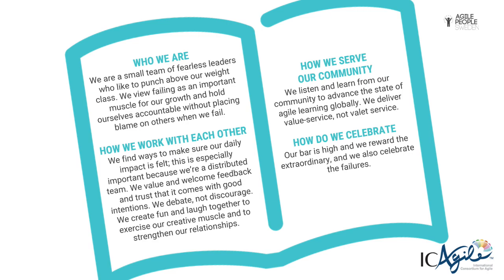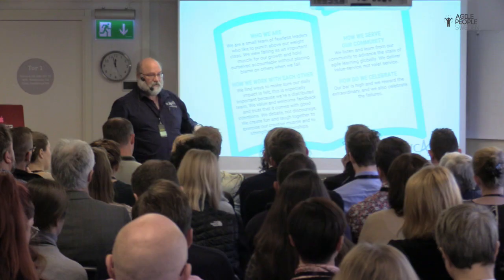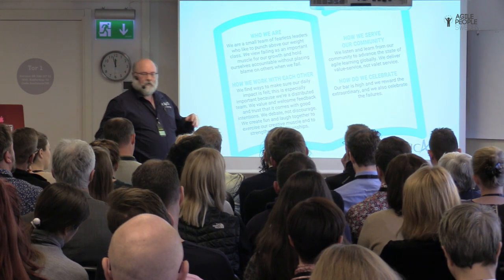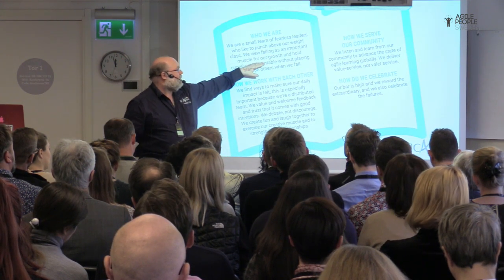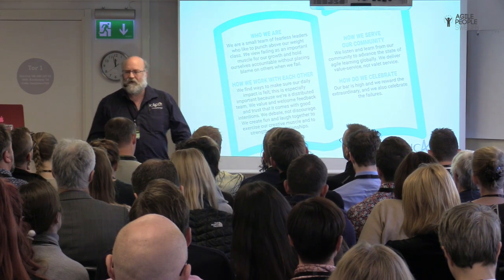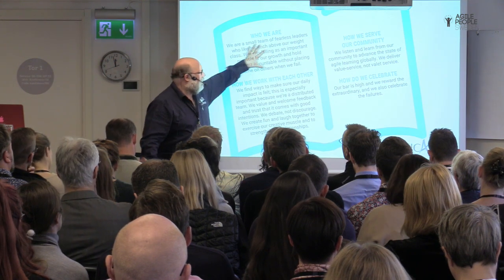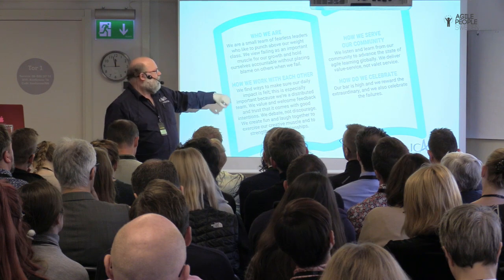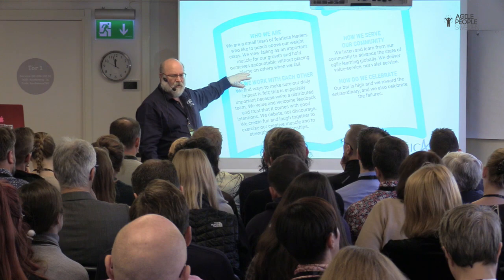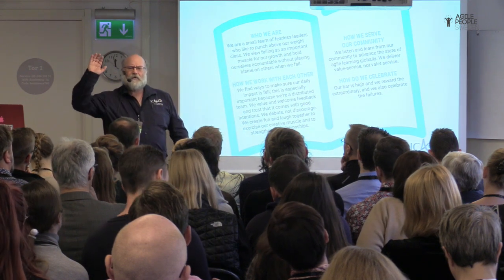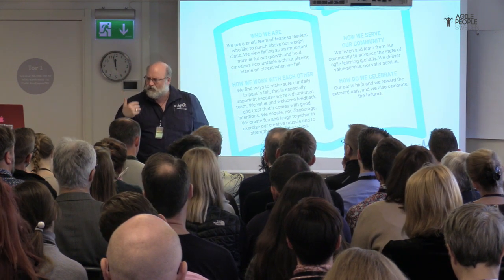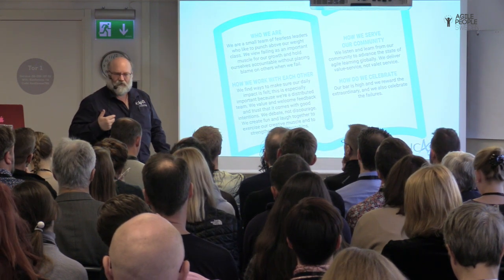We're a small team of fearless leaders — we like to punch above our weight class. We're competing against, dare we say, the Scrum Alliance, the 800-pound gorilla. We view failing as an important muscle for our growth, and we hold ourselves accountable without placing blame when we fail. We've written this down, we all have a copy. If we ever get into a conversation where it feels like we're starting to place blame, we can actually refer to this and say: wait, that is not what we agreed to. Because we're all human and we naturally fall back on those behaviors.